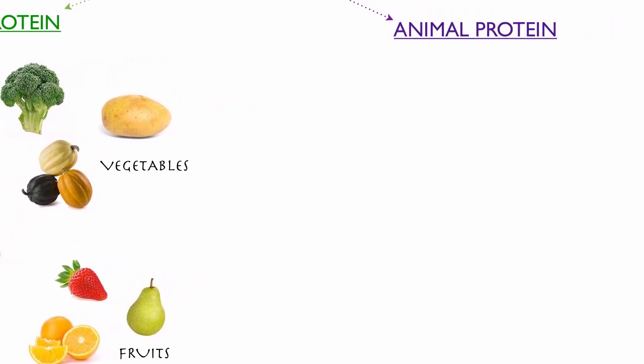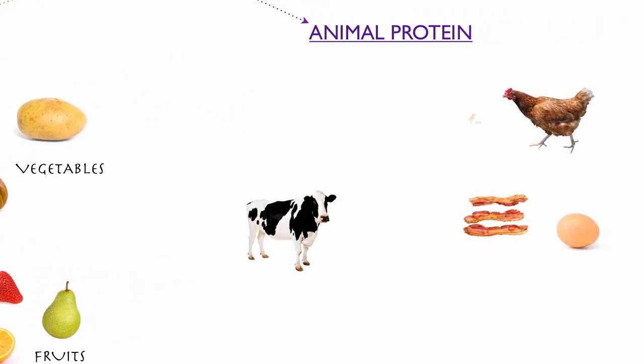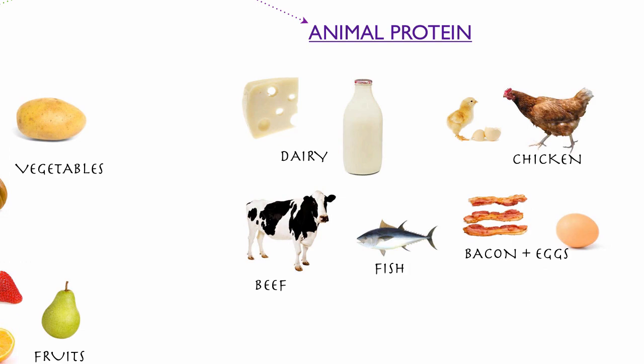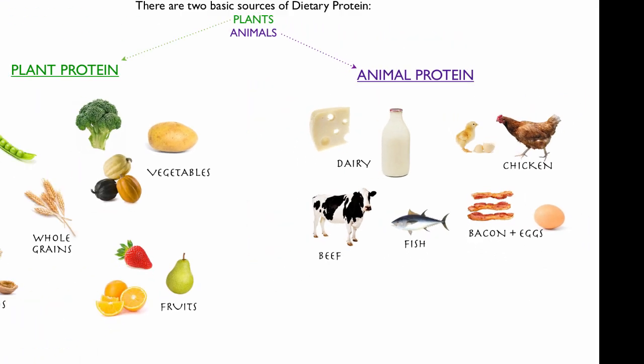Animal protein exists in these types of foods: dairy, chicken, beef, fish, and bacon and eggs.